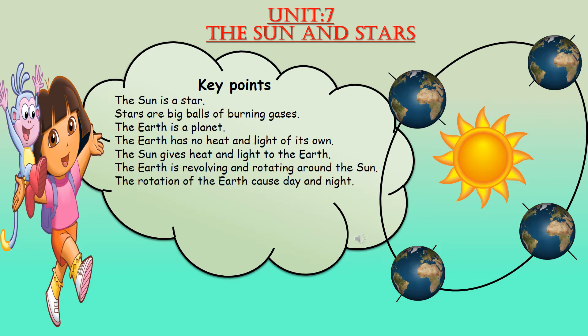Out of those stars, the Sun is also a star. All stars are made up of hot burning gases, and mostly stars are made up of a gas called hydrogen gas. The Earth is a planet — out of eight planets, the Earth is the third planet, and at the center of all planets there is the Sun.